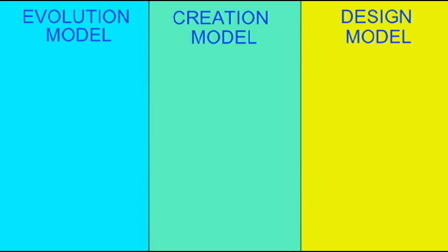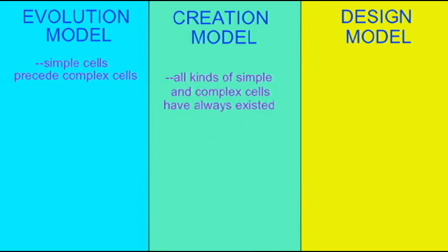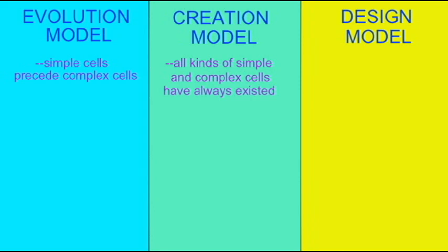In the evolutionary model, simple cells would precede complex cells in the fossil record. In contrast, in the creation model, all types of cells — simple and complex — have always existed and could be found in any layer of rock.